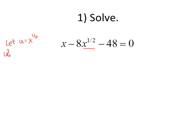Now u squared is the same as x to the 1 half squared, and we know when we raise something like this to a power, we multiply those exponents. 1 half times 2 is 1, so u squared is the same as x. That tells me I can replace x by u squared, replace x to the 1 half by u, and now I have a quadratic equation.